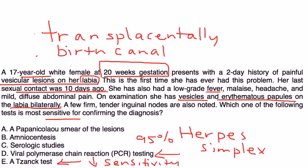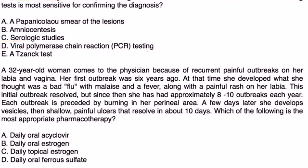Next question: A 32-year-old woman comes to the physician because of recurrent painful outbreaks on her labia and vagina. Her first outbreak was six years ago. At that time she developed what she thought was a bad flu with malaise and fever along with a painful rash on her labia. This initial outbreak resolved, but since then she has had approximately eight to ten outbreaks a year. Each outbreak is preceded by burning in her perineal area. A few days later she develops vesicles and shallow painful ulcers that resolve in about ten days. Which of the following is the most appropriate pharmacotherapy?